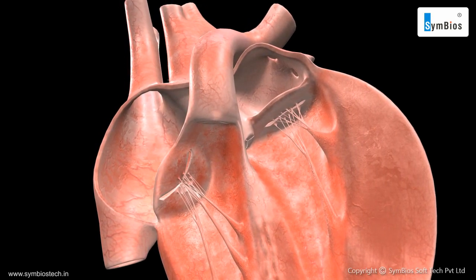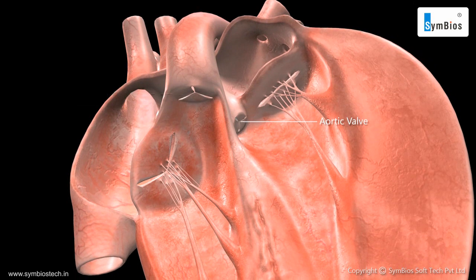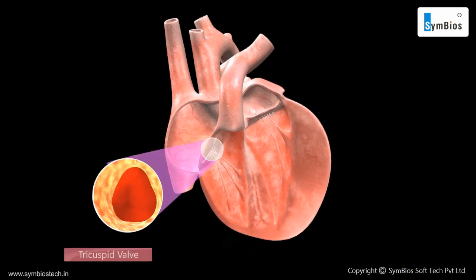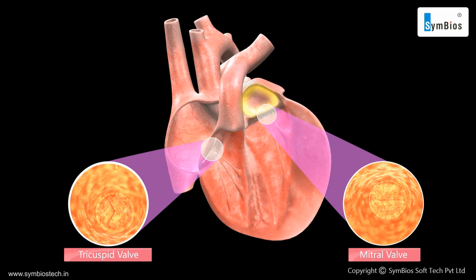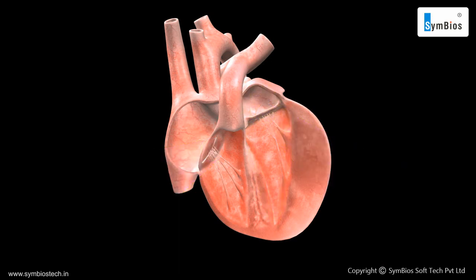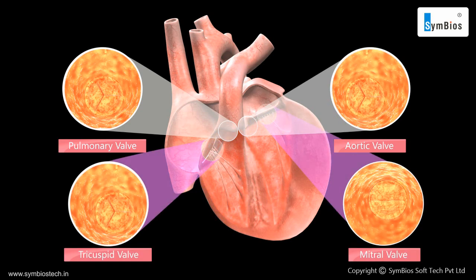There are four valves within the heart: the tricuspid valve, mitral valve, pulmonary valve, and the aortic valve. The tricuspid valve guards the opening between the right atrium and the right ventricle, and the bicuspid or mitral valve guards the opening between the left atrium and the left ventricle. The openings of the right and left ventricles into the pulmonary artery and the aorta respectively are guarded by two semilunar valves — the pulmonary valve and the aortic valve. These valves ensure that blood flows only in one direction and prevent backward flow when the atria or ventricles contract.